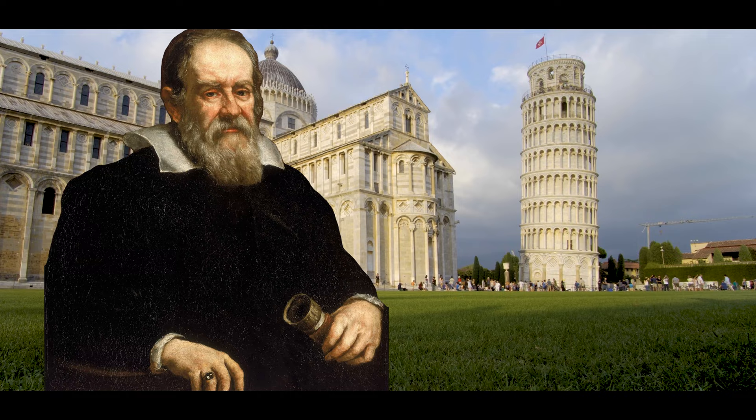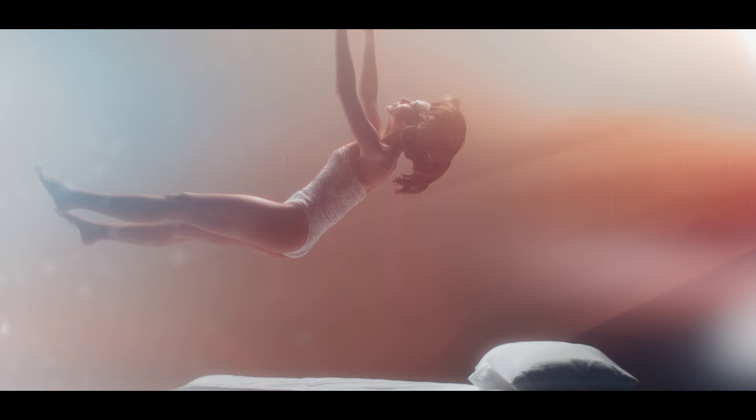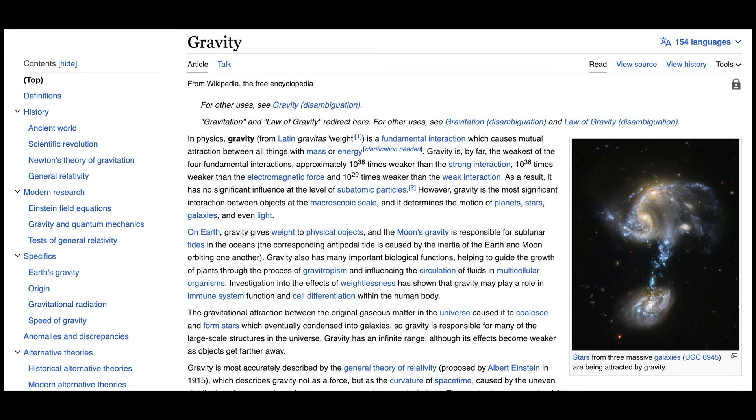Later, the experiments of Galileo Galilei, who dropped weights from the Leaning Tower of Pisa, showed that gravity causes objects of different masses to fall with the same acceleration.